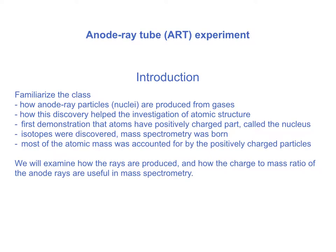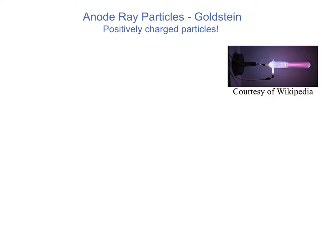The anode ray tube is very similar to the cathode ray tube. I've shown a picture here — it's essentially the same as the cathode ray tube except the electrodes are interchanged. It is a gas discharge tube filled with a very low pressure gas of any kind: neon, argon, krypton, helium, hydrogen, and so on. A strong electric field is applied to produce the radiation.